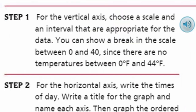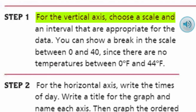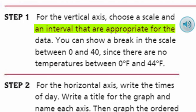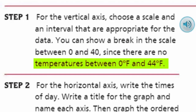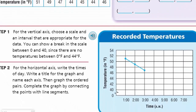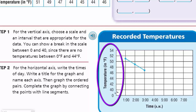Let's look at step one. For the vertical axis, choose a scale and interval appropriate for the data. You can show a break in the scale between zero and 40, since there are no temperatures between zero degrees and 44 degrees. The vertical axis means up and down — the y-axis. On the graph we have temperatures listed on the vertical axis.